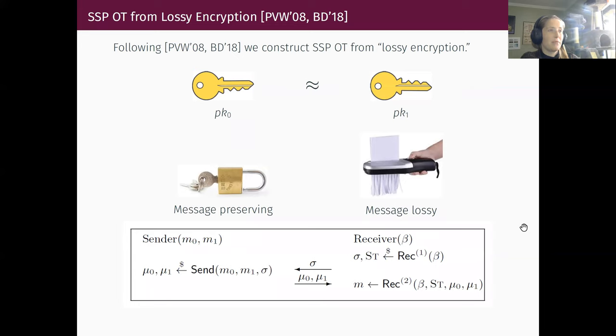Armed with such a lossy encryption scheme, we can now design statistically sender private oblivious transfer as follows. If the receiver's bit is a zero, it's going to generate a lossless public key, otherwise a lossy key. The sender will encrypt its message M0 with respect to the public key, and then transform the key into the alternate mode, and encrypt the other message M1 with respect to this key. And both of these encryptions will be sent to the receiver. This way, we know the appropriate message will be decryptable, and the unselected message will be statistically hidden. And then the receiver's privacy will just follow from the computational indistinguishability of these keys.